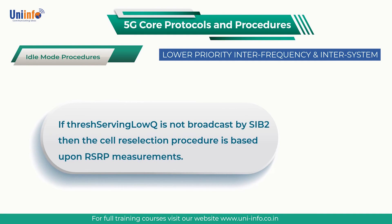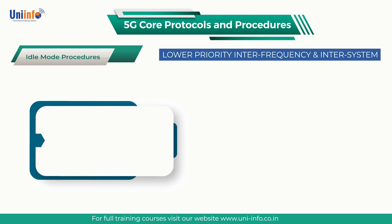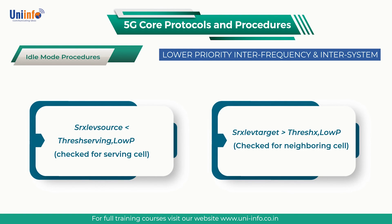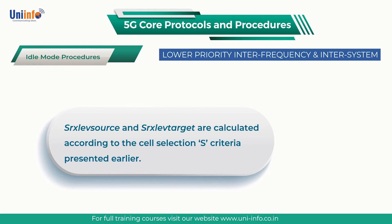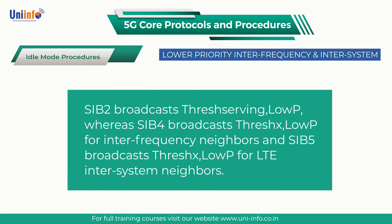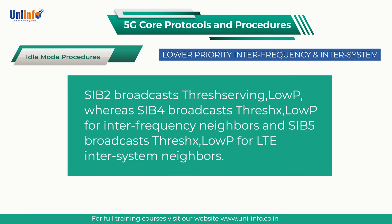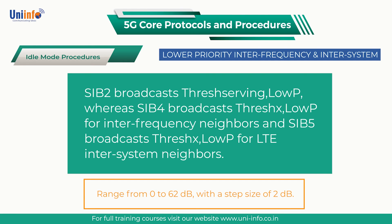If threshold serving low quality is not broadcast by SIB2, then the cell reselection procedure is based upon RSRP measurements. In that case, the UE moves to the lower priority layer if both of the following conditions are satisfied. Condition 1 is checked for the serving cell; condition 2 is checked for the neighbouring cell. SRX level source and SRX level target are calculated according to the cell selection S criteria. SIB2 broadcasts threshold serving low priority, whereas SIB4 broadcasts threshold low priority for inter-frequency neighbours and SIB5 broadcasts threshold low priority for LTE inter-system neighbours. The value of both threshold serving low priority and threshold low priority can range from 0 to 62 dB with a step size of 2 dB.